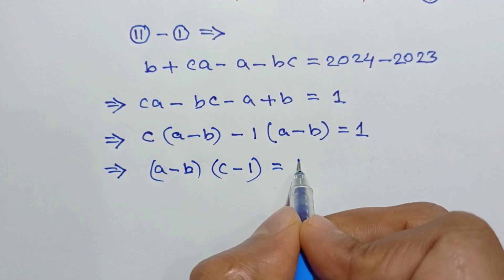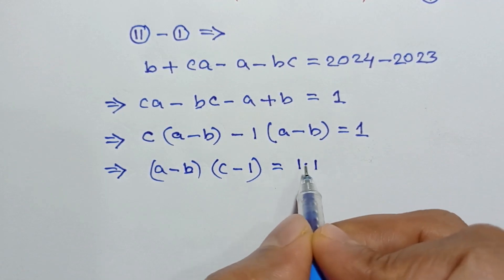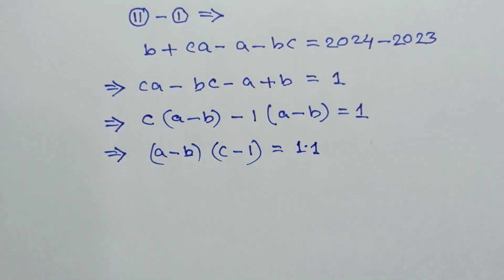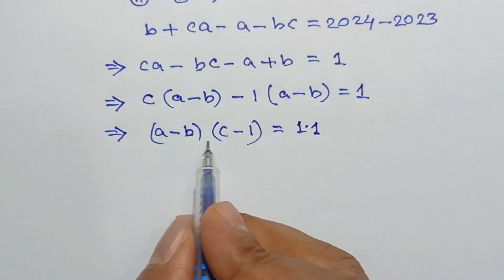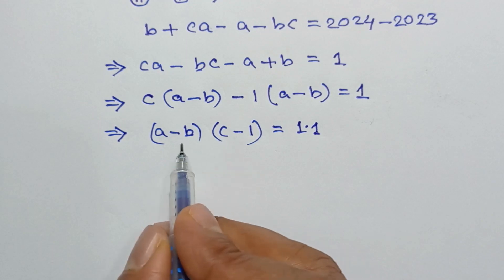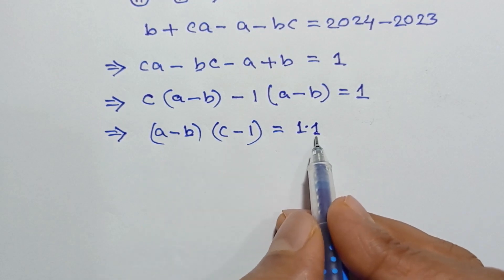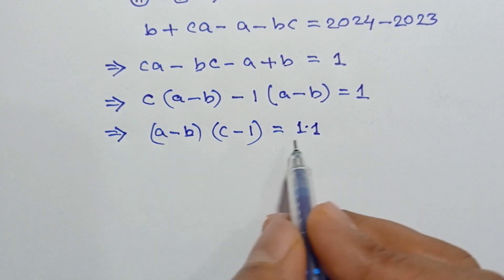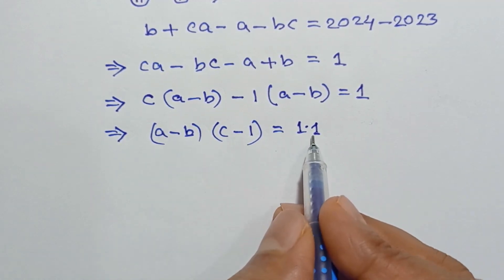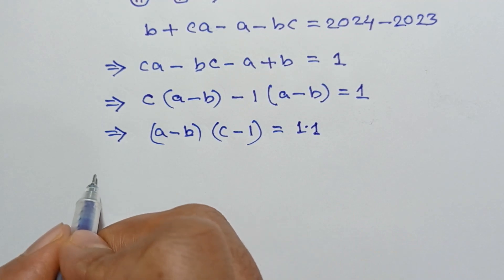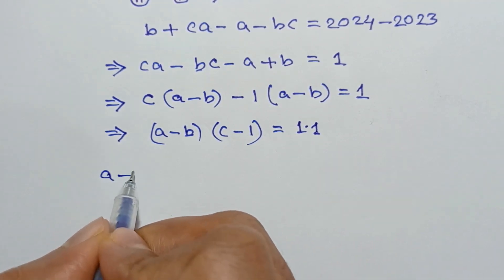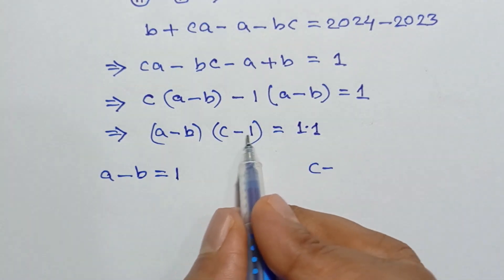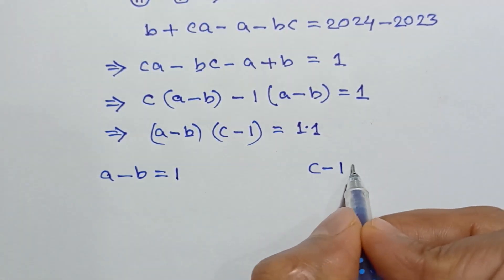This can be written as one times one. So for integer solutions, the left side is the product of two terms and the right side is the product of two terms, so a minus b will be one and c minus one will be one. Therefore a minus b equals one and c minus one equals one.